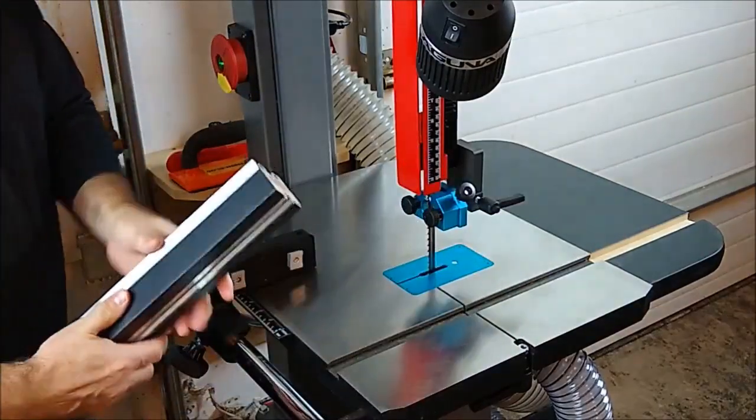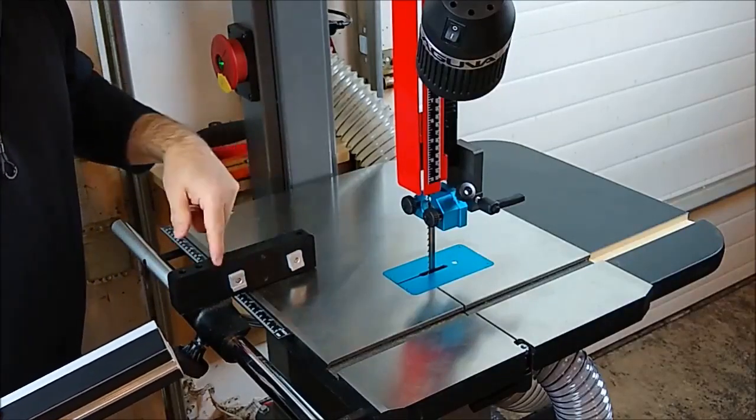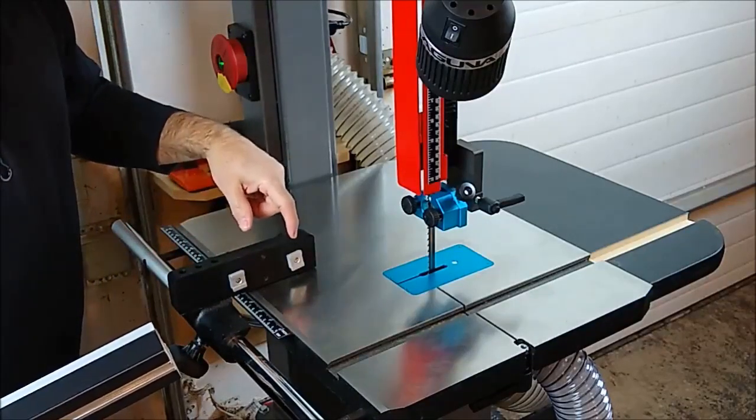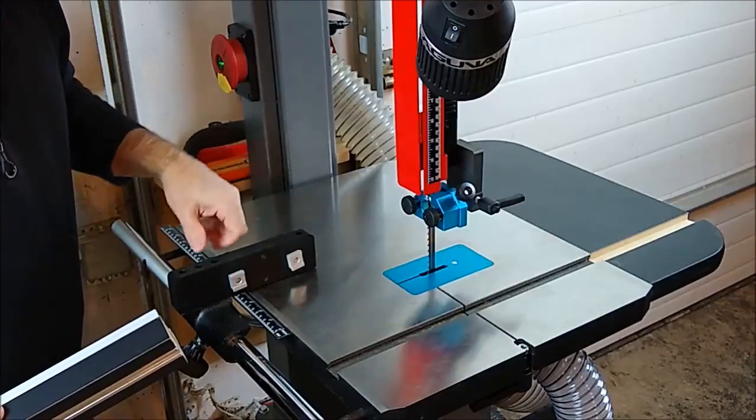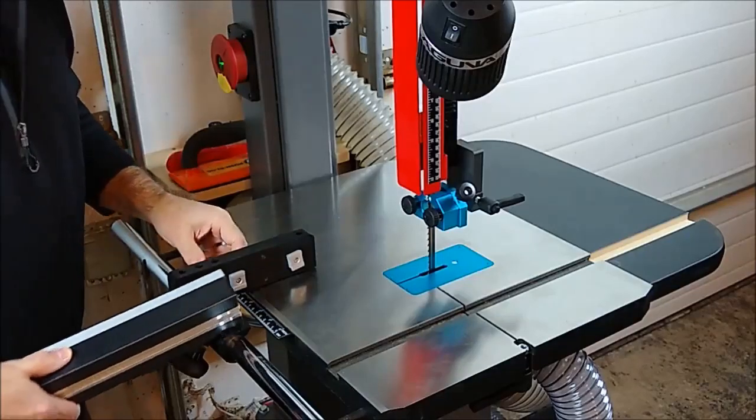So if you're going to install the everyday fence, you need to switch from the factory bar that your saw came with to these little miter track nuts that you can get at Woodcraft, and they'll be oriented like this to use your everyday fence.